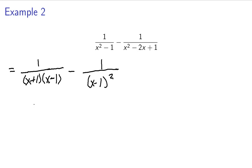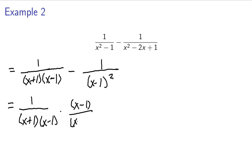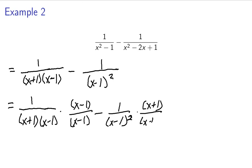Now I want to make sure each fraction has the same denominator. This first one already has x plus 1 and x minus 1, but it's missing the second x minus 1. So we multiply by x minus 1 over x minus 1, giving us x plus 1 times x minus 1 times x minus 1 in the denominator. Over here, we have x minus 1 squared but we're missing the x plus 1, so we multiply by x plus 1 over x plus 1. This becomes x minus 1 over x plus 1 times x minus 1 squared.